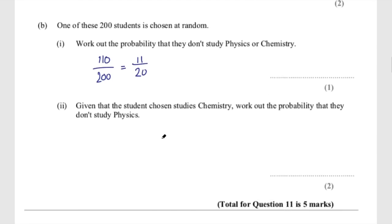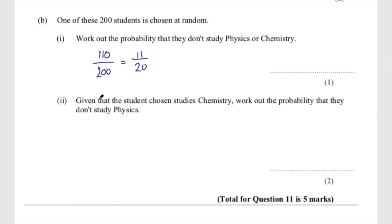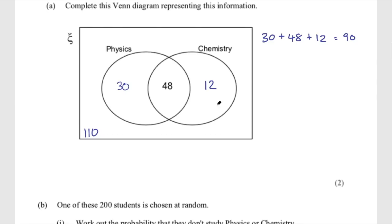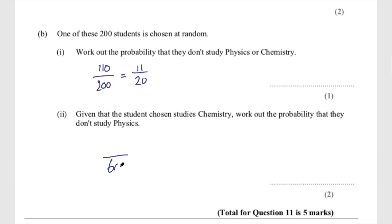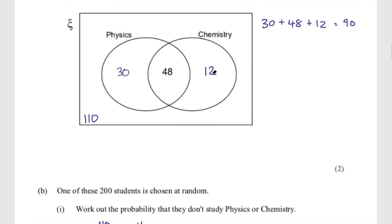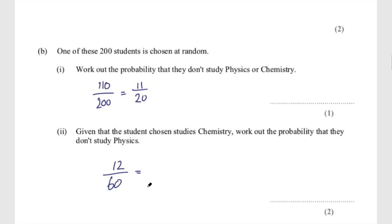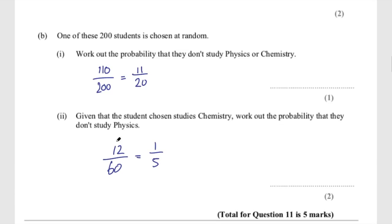Part C: given that the student chosen studies chemistry, work out the probability they don't study physics. This limits the group down to the chemistry set, and we know there are 60 students in that set — so that's the denominator. We need the probability they don't study physics, which is the number not in the intersection: 12 out of 60, which simplifies to one-fifth. 12 out of 60 or one-fifth is fine for two marks.